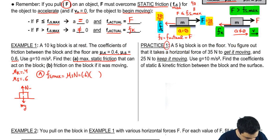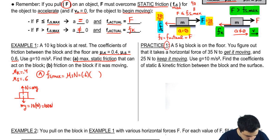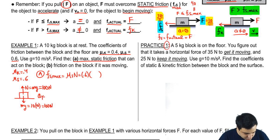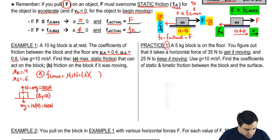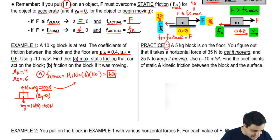If I have a block at rest, Mg goes down and normal equals Mg. The mass is 10 and gravity is 10, so Mg equals 100, and normal equals 100 as well — because the object has no acceleration in the y-axis, so the forces cancel. So plugging in, Fs max equals 0.6 times 100 equals 60. The maximum static friction this block is capable of experiencing is 60 Newtons.